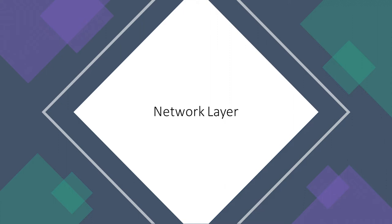Our discussion of the network layer will be split into two parts. In this first lecture, we will discuss the architecture of the internet, how routers work, the internet protocol, and the structure of the IP packet. In the following lecture, we will look into the various routing protocols which dictate the rules that routers and autonomous systems follow on how to forward packets such that they reach their final destination as efficiently as possible. We will talk about shortest path algorithms like Dijkstra and Bellman-Ford and how they are used to route traffic on the internet.